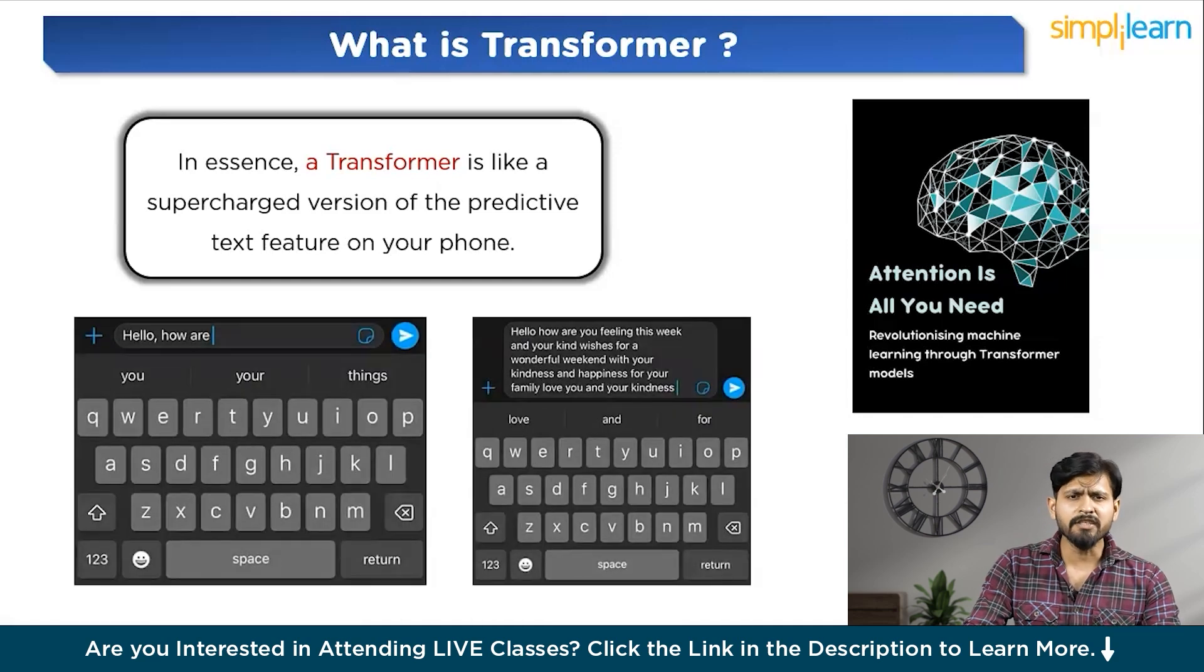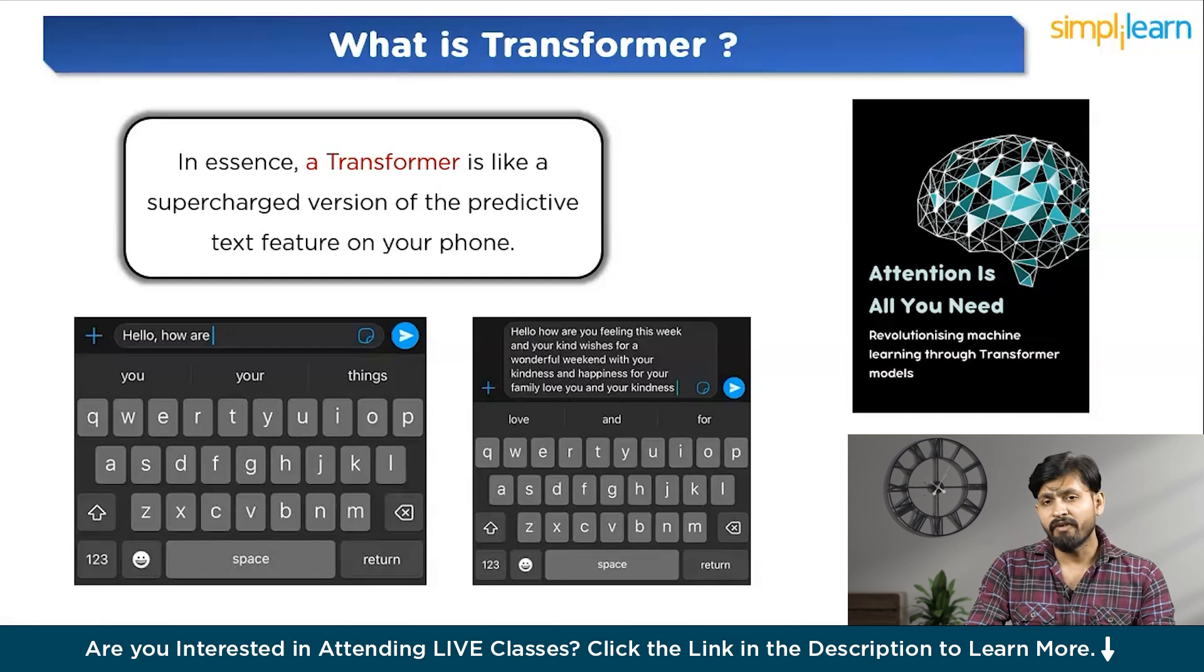While your phone may offer certain suggestions that don't always create coherent sentences, a Transformer keeps track of the bigger picture, producing text that flows naturally and makes sense. When you are typing a message, your phone suggests words based only on what you have typed recently. But a Transformer goes beyond that.